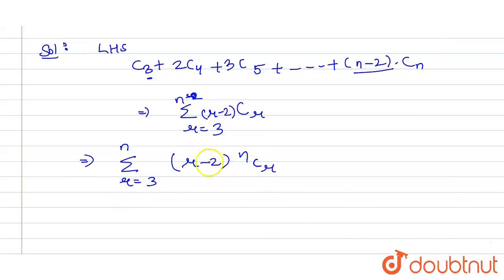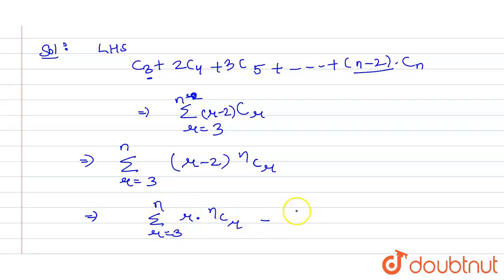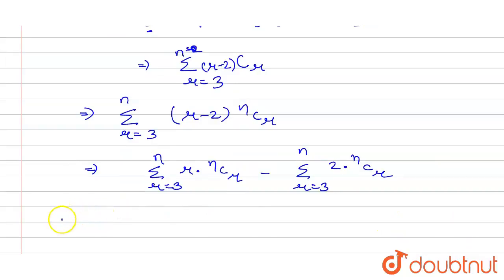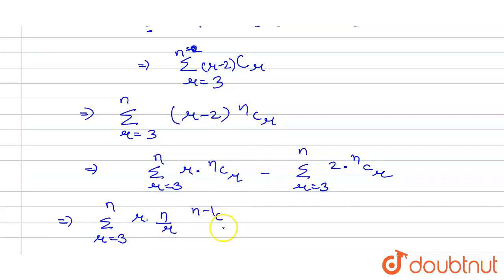We multiply nCr inside and distribute the summation. It becomes: summation r=3 to n of r·nCr minus summation r=3 to n of 2·nCr. Now, r·nCr equals n·(n-1)C(r-1), so the first part becomes summation r=3 to n of n·(n-1)C(r-1).